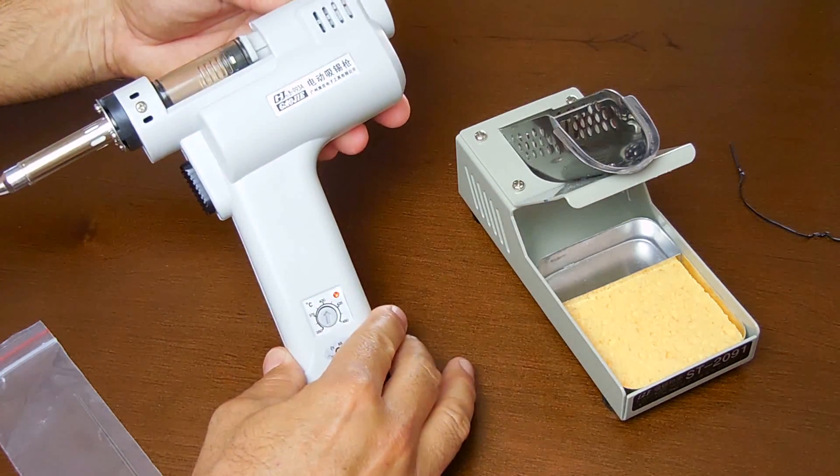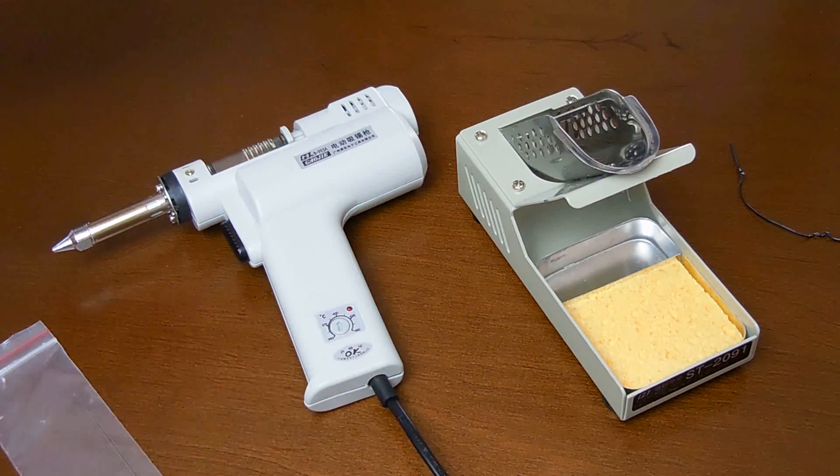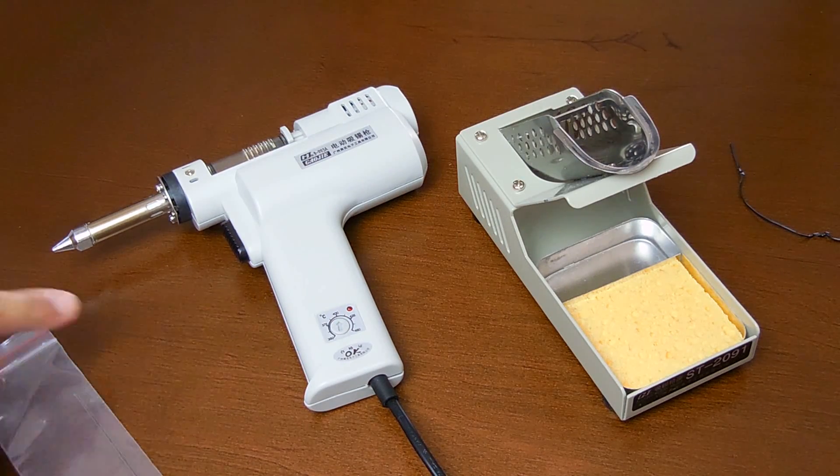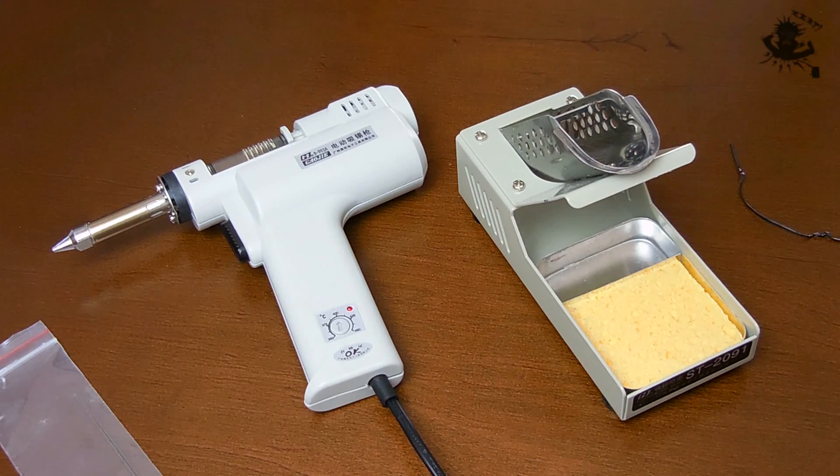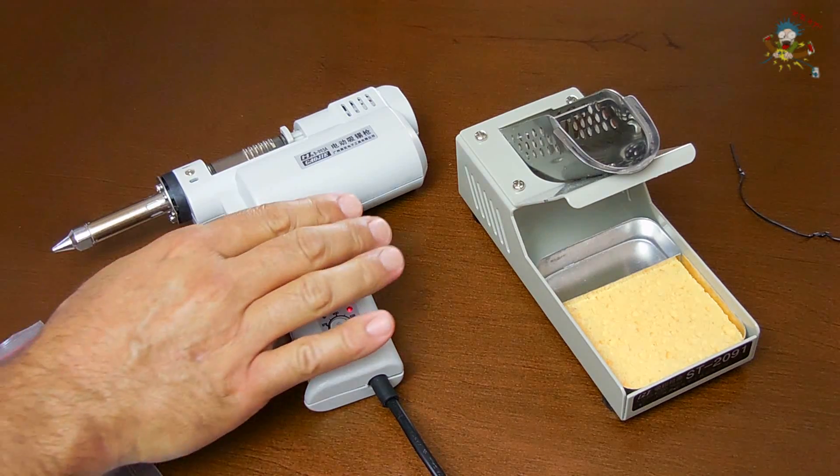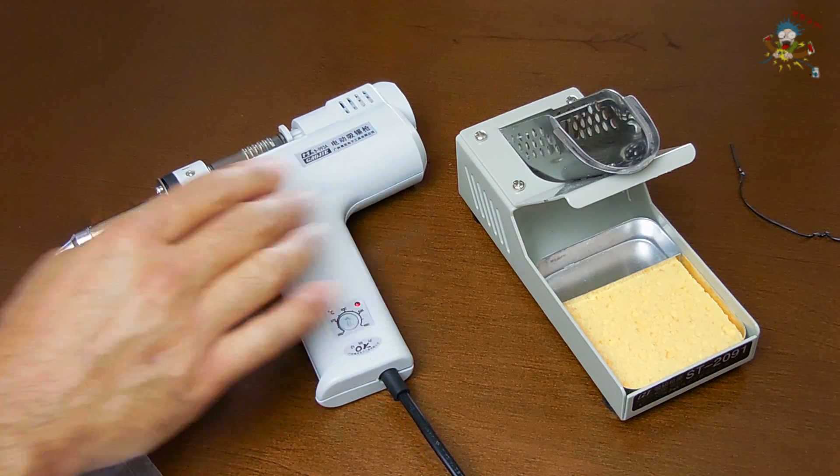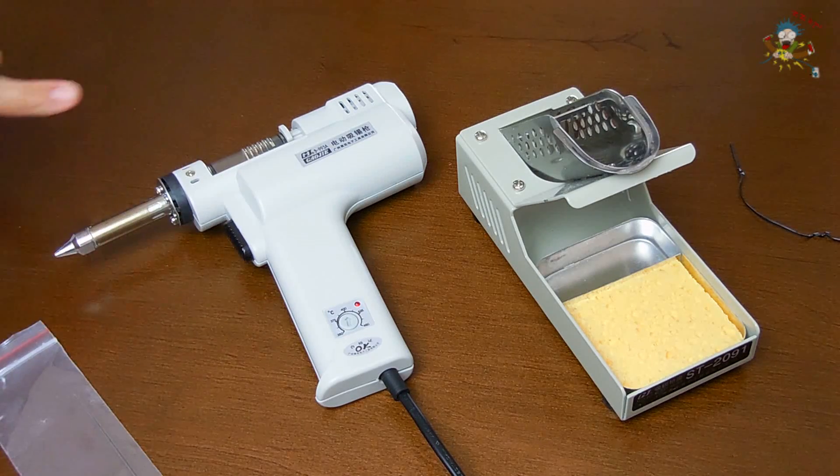Once the light is no longer on, you can place the tip against the solder connection, push the button, and the pump will come on drawing away all the solder into the tube.